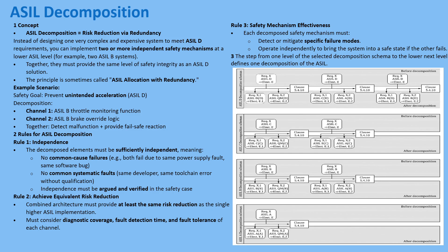Part 9 lays out specific decomposition formulas to keep things mathematically equivalent. For ASIL D, options include B(D)+B(D), C(D)+A(D), or D(D)+QM(D). ASIL C can be decomposed as B(C)+A(C) or C(C)+QM(C). The absolute non-negotiable rule is independence: those decomposed channels must be sufficiently independent — meaning no single fault or common cause can take out both channels at the same time. If your ASIL B throttle monitor and ASIL B brake override both fail because of the same software bug or a shared power supply glitch, the decomposition is worthless — you've lost your redundancy. Rule two is equivalent risk reduction: the combined architecture must statistically deliver the same overall safety level as the original single ASIL D requirement.